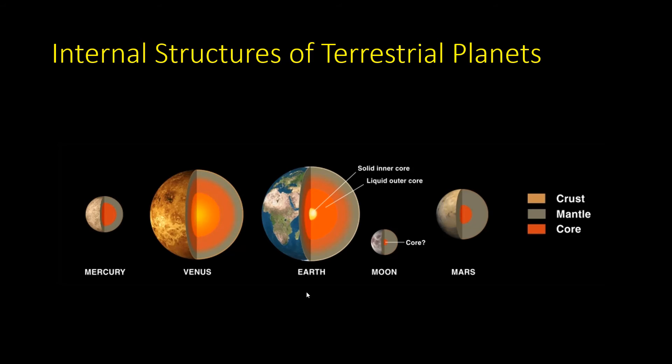The magnetic fields, again, are related to the internal structure of the planet. Notice that Mercury and Mars have very small cores, and there's not a lot to them, whereas Earth has a very active core.